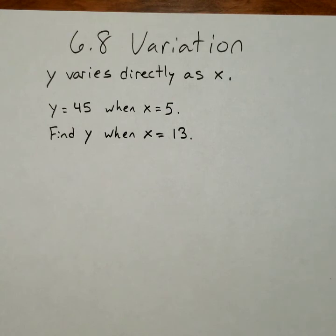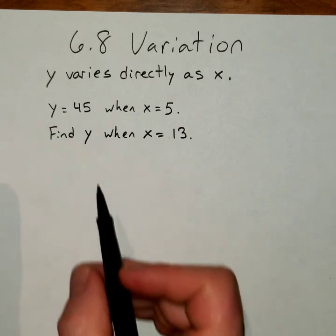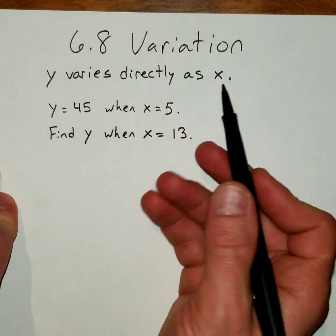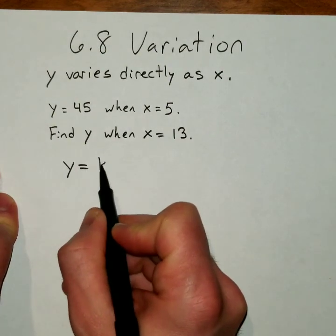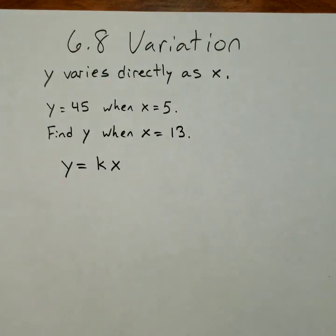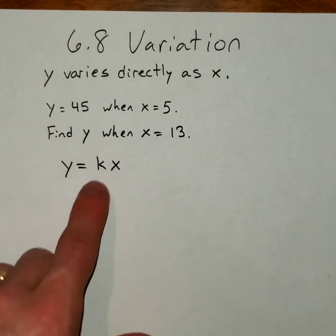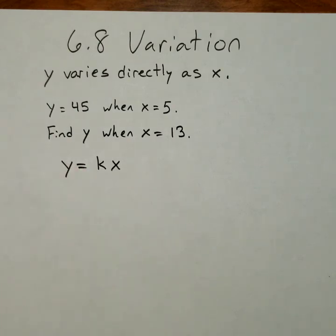Well, whenever you see a direct variation problem, or inverse variation, but we'll go direct here, you start out with writing the general formula out. The general formula, y varies directly as x, is the formula y equals kx. So there are three things that we don't know: y, k, and x. We do know that k will be constant. Once we find k, it's going to be the same throughout the problem.